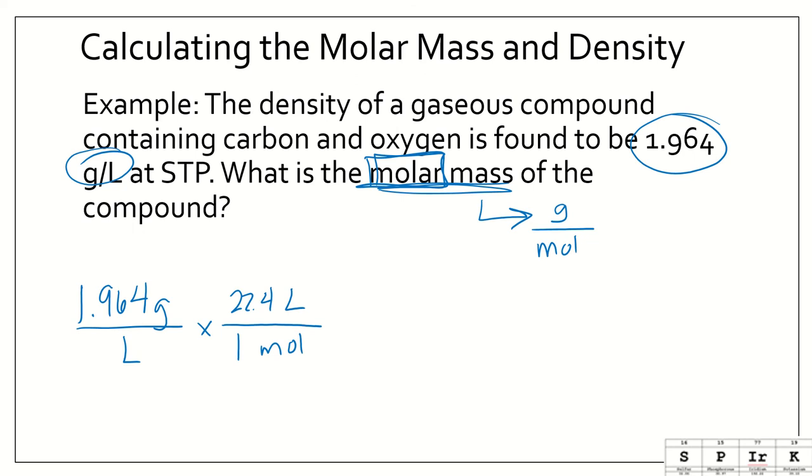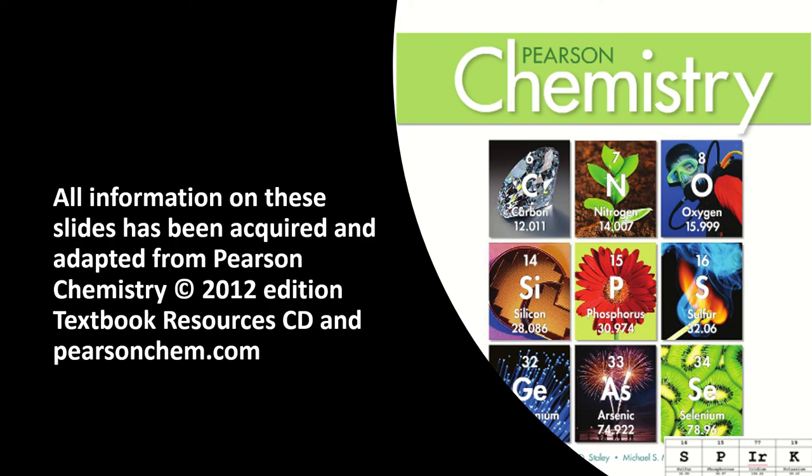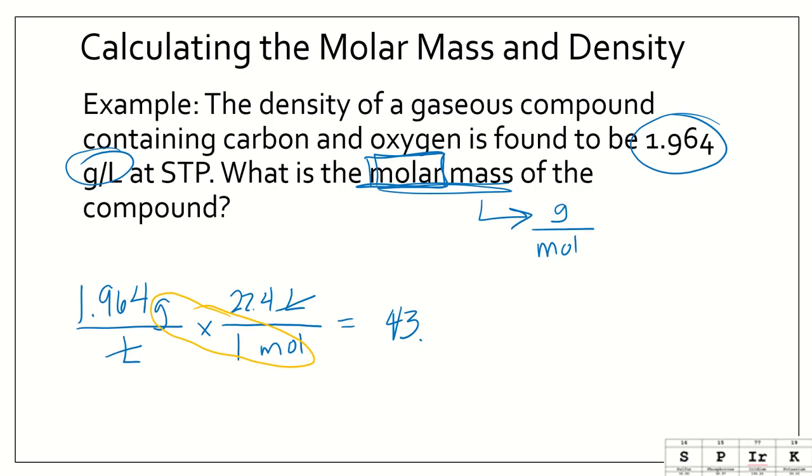We're going to use that molar volume ratio to get grams per mole because we know that 22.4 liters of gas is equivalent to 1 mole. We want liter to cancel with liter. If you look at what units I have left, grams divided by mole. I'm going to calculate this out, and I get 43.99 grams per mole.